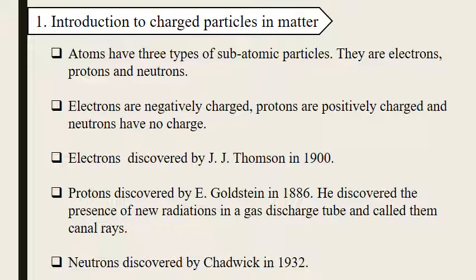Atoms have three types of subatomic particles, and these particles are electrons that are negatively charged, protons that are positively charged, and neutrons that have no charge. Electrons were discovered by J.J. Thomson in 1900, protons discovered by E. Goldstein in 1886, and neutrons discovered by Chadwick in 1932. When Goldstein discovered protons, he discovered new radiations in a gas discharge tube and called them canal rays.